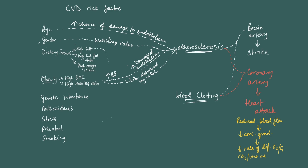High salt causes high blood pressure. The more salt you have in your blood, the more solute concentration is in your blood, which causes more water to enter the blood by osmosis. The more water you have in your blood, the higher the blood volume, and this causes an increase in blood pressure — because you're trying to fit more volume into the same blood vessels.